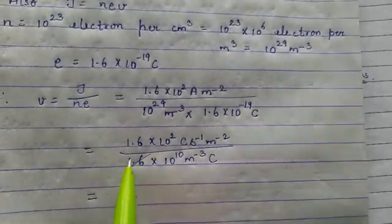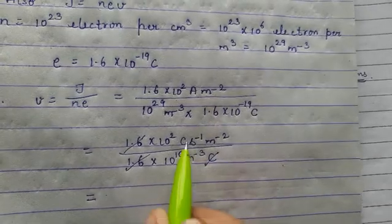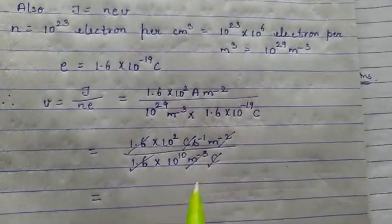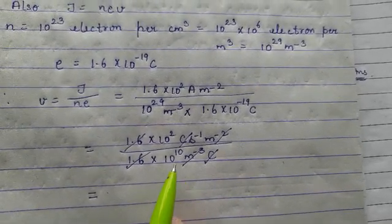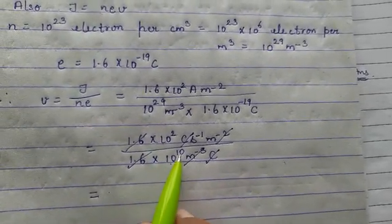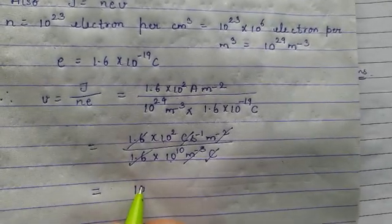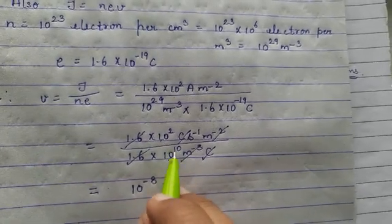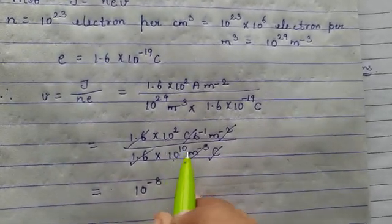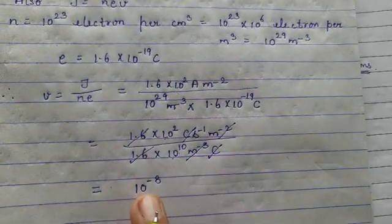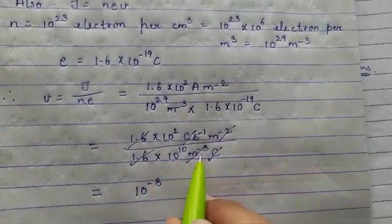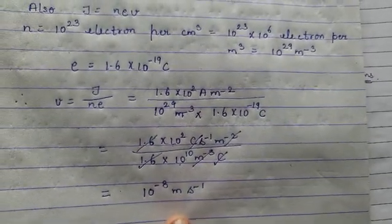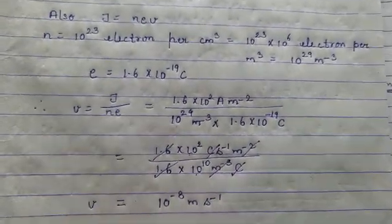The 1.6 factors cancel with each other, and coulomb cancels with coulomb. Only one power term is left. Since the denominator has a higher order term, we subtract the powers: the result is 10 raised to power minus 8 meters per second. So this is the value of average drift velocity. Hope it is clear to all, thank you.